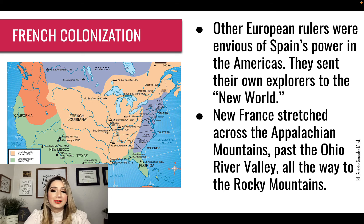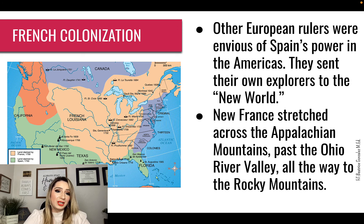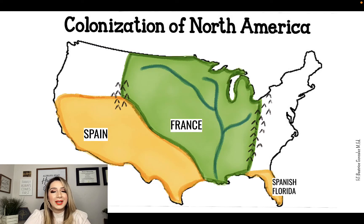Other European rulers were envious of Spain's power in the Americas and set their own explorers to the New World. New France stretched across the Appalachian Mountains, past the Ohio River Valley, and all the way to the Rocky Mountains. Take a look at the map — that yellow shaded area was all French settlement. Go ahead and press pause and color it in.